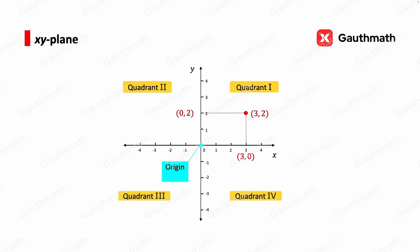Points on the x-axis have the y-coordinate 0, and points on the y-axis have the x-coordinate 0, and the coordinates of the origin is 0, 0.